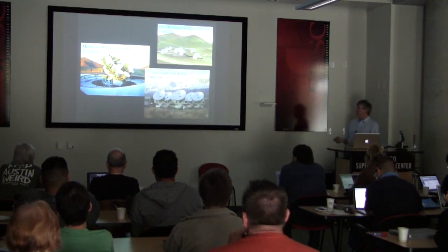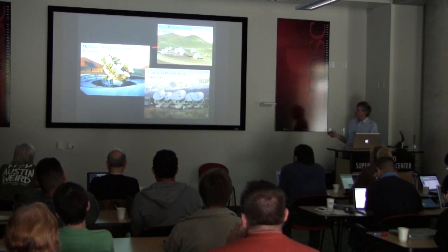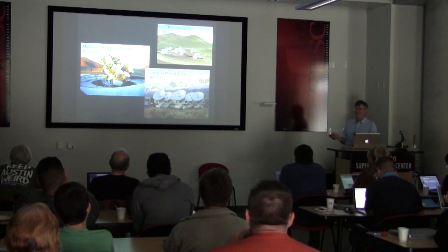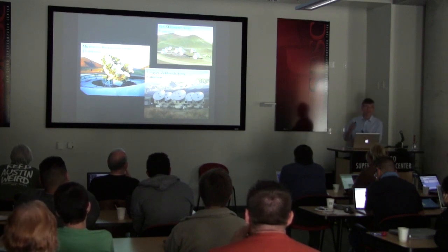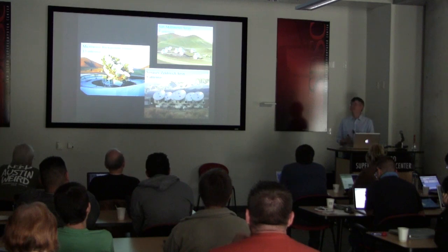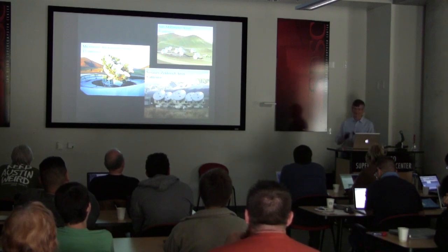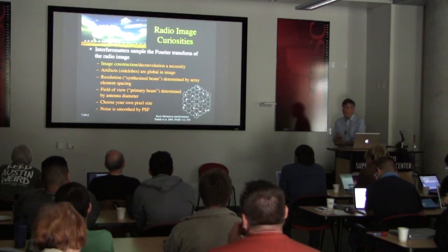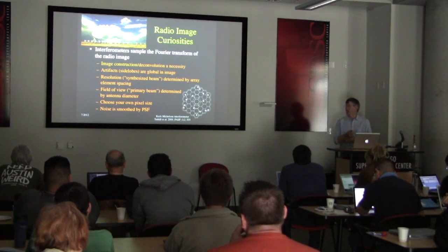There are other interferometer examples — the microwave background imager, Submillimeter Array, and the Sunyaev-Zel'dovich Array. Interestingly, these have Fibonacci numbers of antennas — 8 and 13 — which turns out not to be a coincidence but actually a design characteristic of interferometers. Radio images have many curious properties arising from the fact that they're created by sampling the Fourier plane.